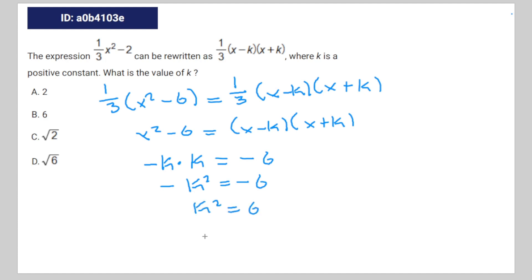Square root both sides of the equation and you're going to get k is equal to the square root of six. Therefore, D is the correct answer.